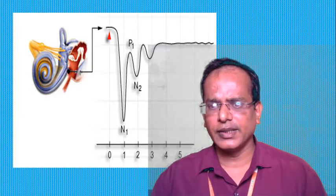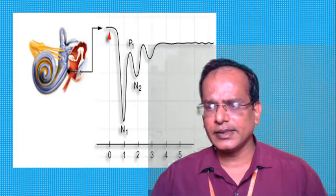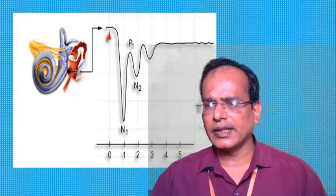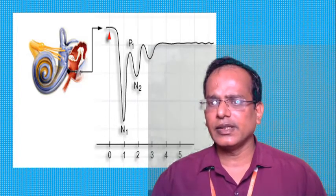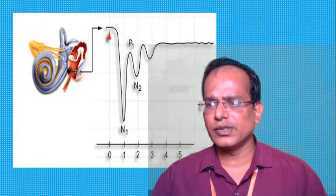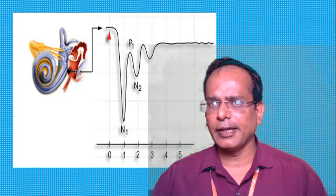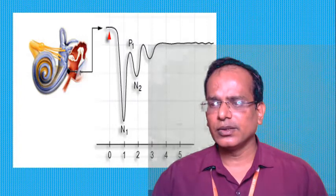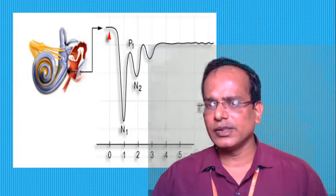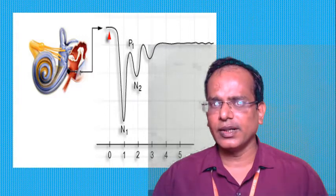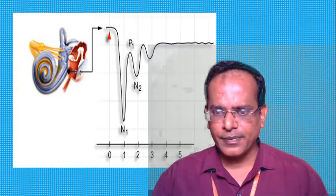The unit action potential is an experimental technique not used in humans. A micro electrode records the electrical activity from a single neuron in the auditory nerve. The auditory fibers respond to sound stimulation, sending action potentials towards the brain. The latency between the sound stimuli and the action potential is about one millisecond, as seen in the graph.